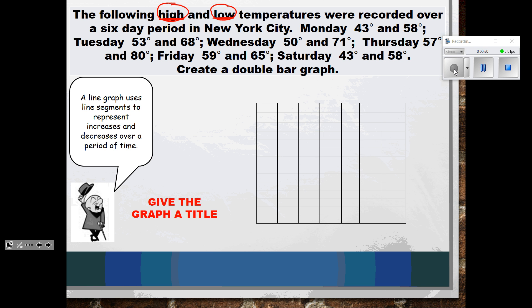A line graph is usually used to represent increases and decreases that are seen over a period of time. The time could be days of the week, over years, or over months. Typically, this is when we use a line graph — when we're watching things over a period of time.